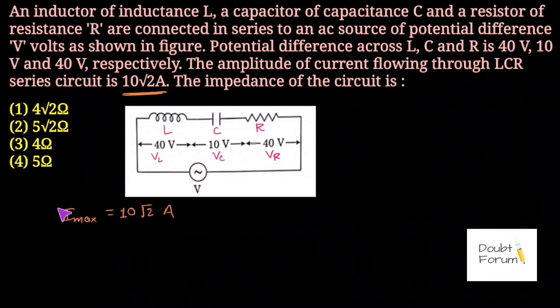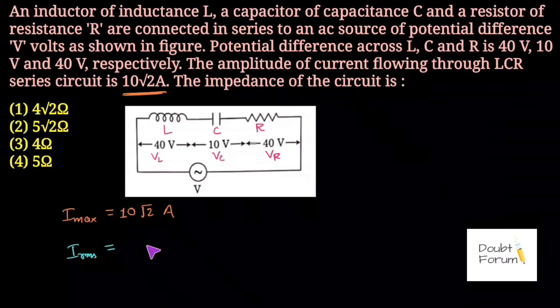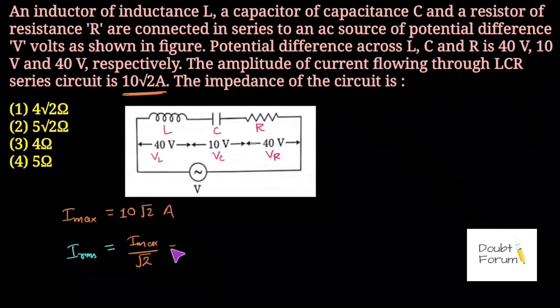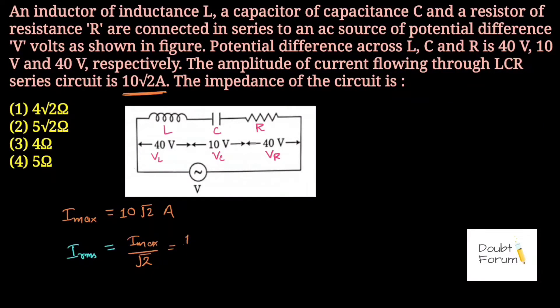From this maximum value of current, we can find the RMS value of current flowing in this circuit. The formula for RMS current, IRMS, is Imax divided by √2. Placing the value of Imax as 10√2 in this formula, we get the RMS current as 10 ampere.